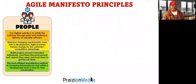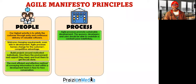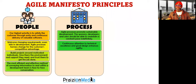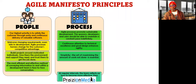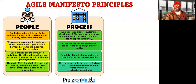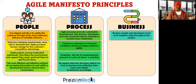Build projects around motivated individuals. The most efficient and effective method of communicating is face-to-face conversation. Process: Agile processes promote sustainable development. The sponsors, developers, and users should be able to maintain a constant pace indefinitely. You've got to pay attention to technical excellence — it'll save you a whole lot of trouble. Simplicity is the art of maximizing the amount of work not done. Don't do busy work. At regular intervals, a team reflects on how to become more effective. They tune and adjust accordingly after a retrospective.